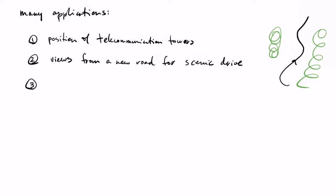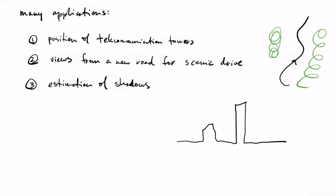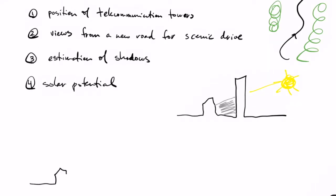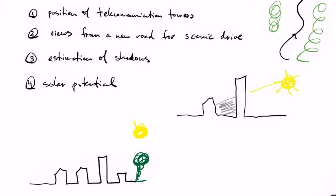A third application is the estimation of shadows, which is also a visibility query. A fourth is solar potential: we want to know where to put solar panels on a roof, so we check if there is direct visibility from the sun. In that case the sun becomes the viewpoint, and we want to know if anything is blocking the view from the sun to the given roof.